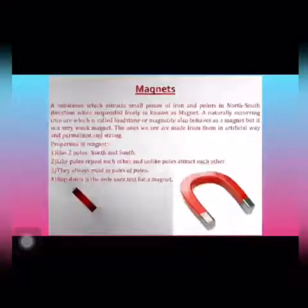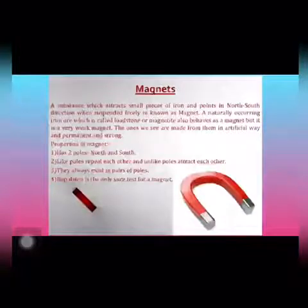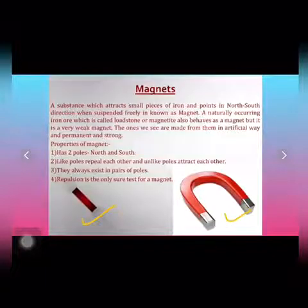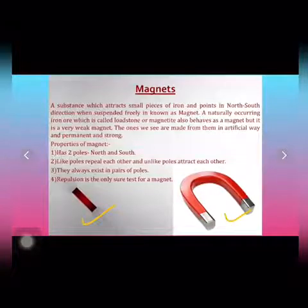A magnet is a substance which attracts pieces of iron, steel, nickel, and cobalt. It comes in various shapes and sizes. One of the most common magnets is the bar magnet, as shown here. This is a horseshoe magnet, and the bar magnet is the most commonly used magnet — a long rectangular bar which attracts pieces of iron, nickel, etc.